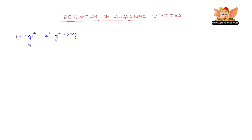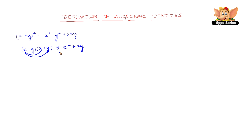How did we get x square plus y square plus 2xy? It's very simple. x plus y the whole square is nothing but x plus y into x plus y. We just need to multiply these two algebraic terms. So first we have x into x which is x square, and then x into y which is plus xy, and y into x is again xy, and y into y is y square.